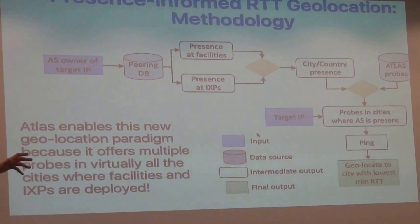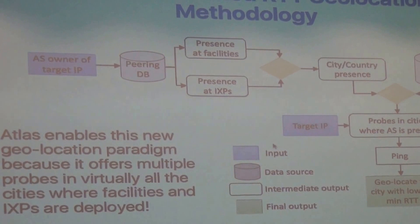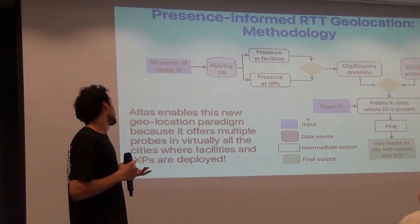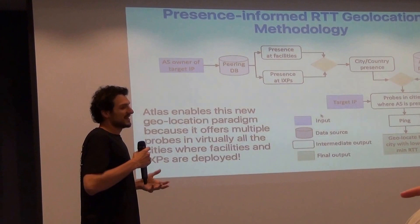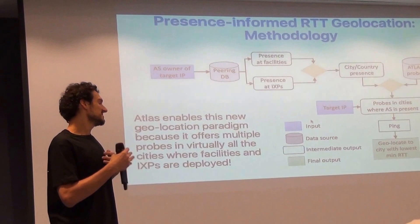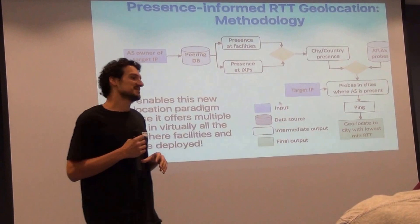We implemented presence-informed RTT-based geolocation. The key intuition is that a target IP will be in an area where the AS has presence, not just anywhere in the world. We collect the presence of the AS across all possible cities, take the Atlas probes in those cities where the AS claims presence, run pings, and select the city with the lowest ping if the ping is low enough to indicate locality — say, less than 5 milliseconds.